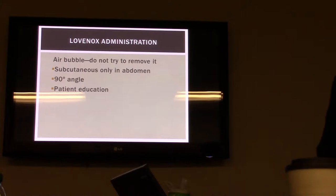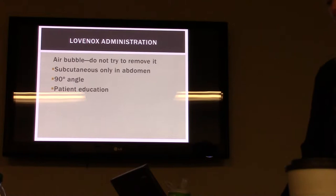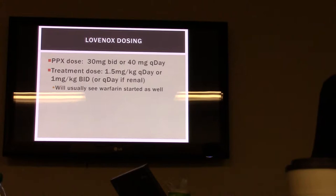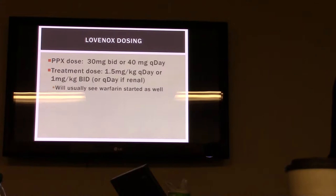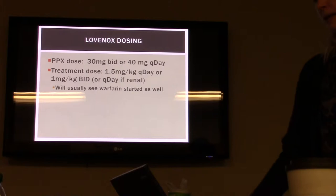For Lovenox administration, you want to inject it into subcutaneous fat in the abdomen. It does have an air bubble — you don't want to remove that. Inject it at a 90-degree angle and go over patient education with the patient. For dosing: prophylactic dose is 30 milligrams twice a day or 40 milligrams once a day. Treatment dose is weight-based — 1.5 mg/kg once a day or 1 mg/kg twice a day; renally adjust for renal patients. Usually you will see warfarin started as well.